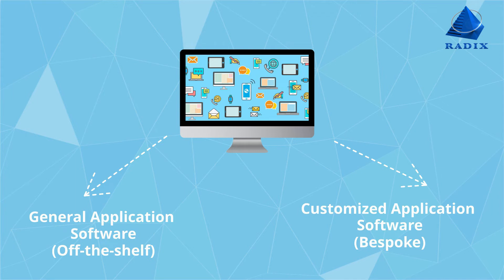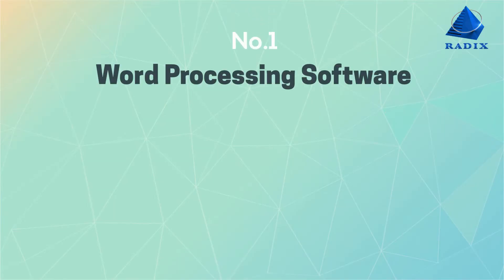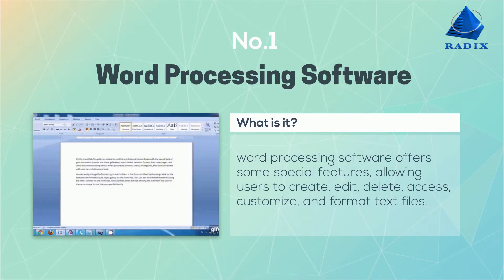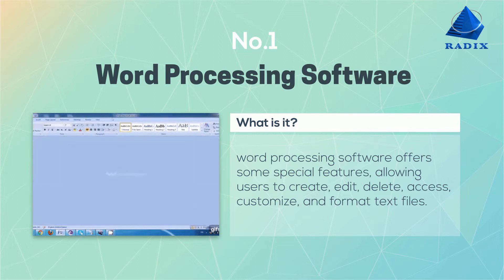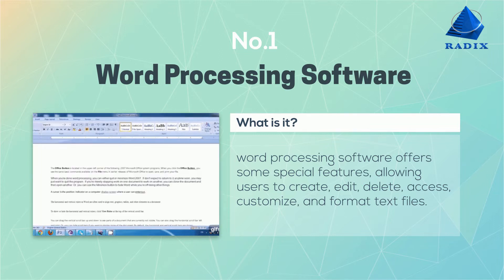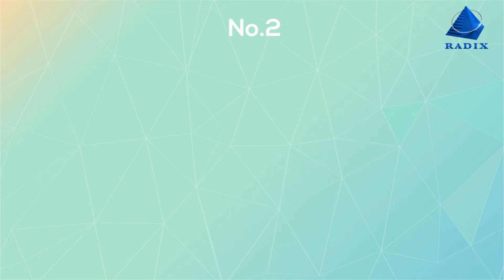General application software can be broken into nine further types. Number one: word processing software. Word processing software offers special features allowing users to create, edit, delete, access, customize, and format text files.